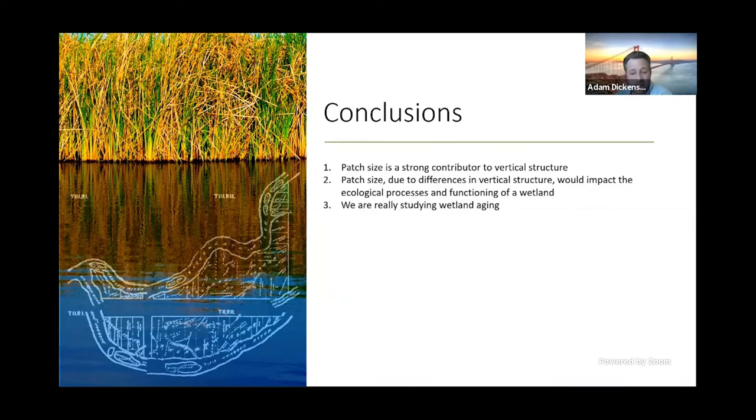And finally, what we're really studying here is wetland aging. Small patches are newly colonized areas or very young patches. Midsize patches represent a transitional phase as patches demonstrate a great degree of heterogeneity. The largest patches are areas of older vegetation and stabilized growth patterns. So by using patch size as a proxy for patch age, or what's called a space for time substitute, what we're really looking at are changes occurring in a wetland as it ages, or the maturation process.